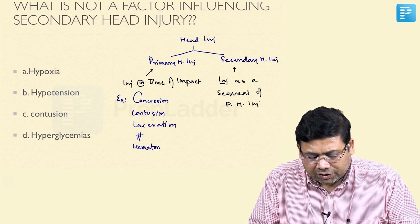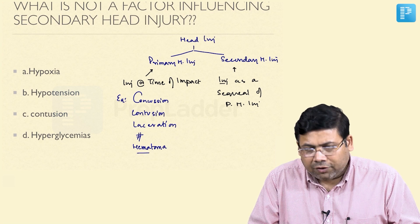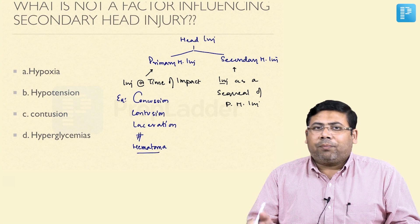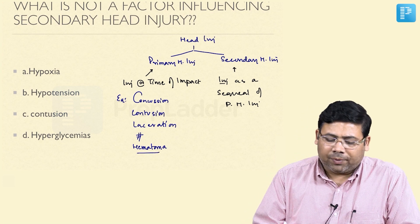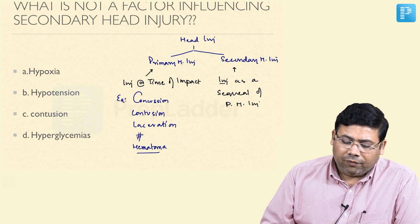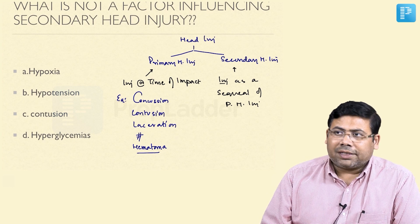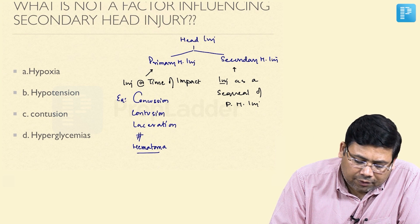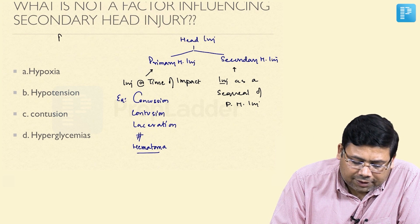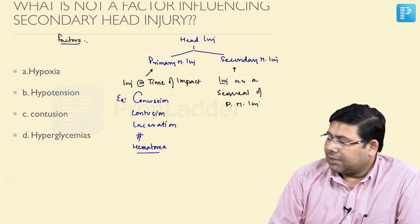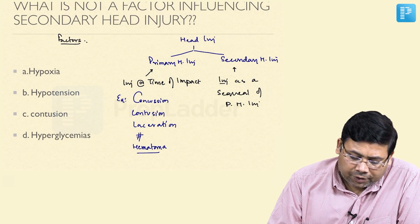Secondary head injury refers to all the neurological deficits or complications which happen as a result of the primary injury. When we talk about secondary head injury, what are the important factors that control it?